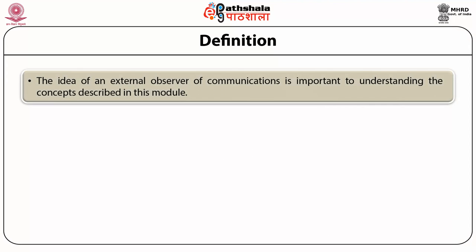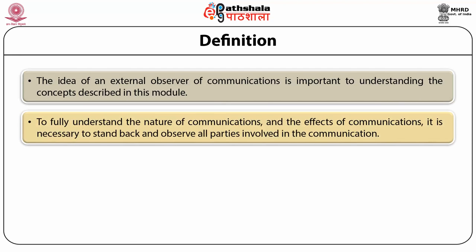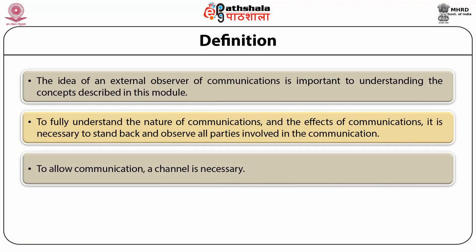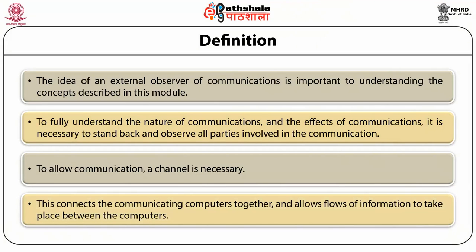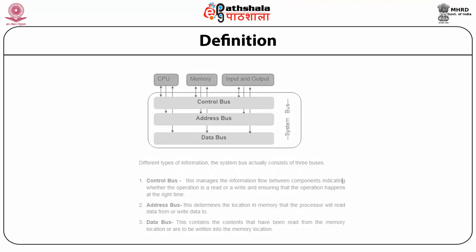The idea of an external observer of communication is important for understanding this module. To fully understand the nature and effects of communication, it is necessary to observe all parties involved. A channel is necessary to allow communication — it connects computers together and allows information to flow between them. Buses facilitate the CPU, memory, and input — there are three kinds: Control Bus, Address Bus, and Data Bus.